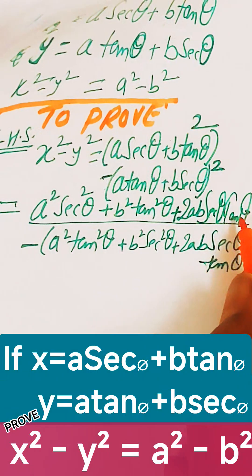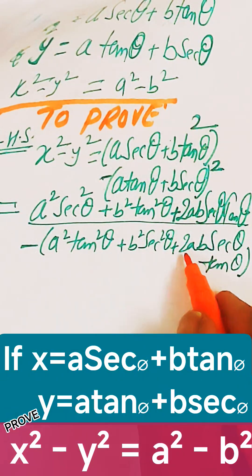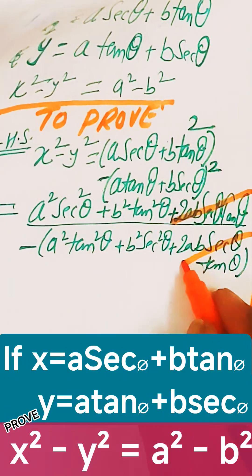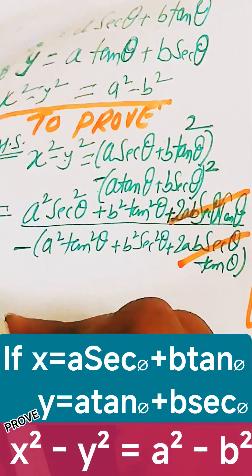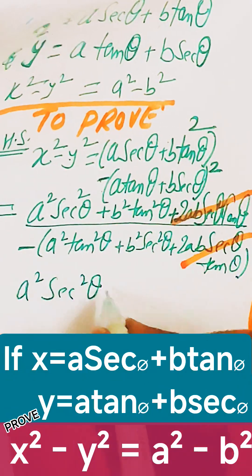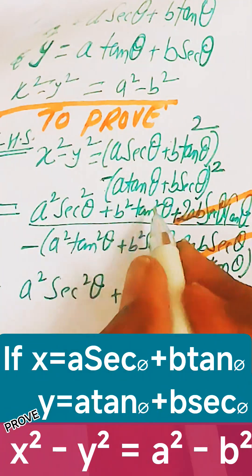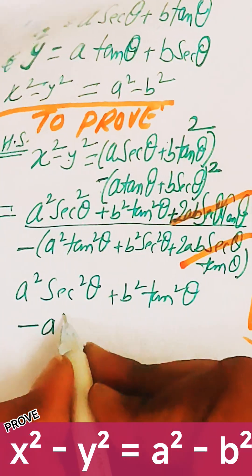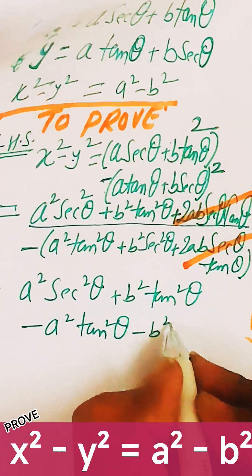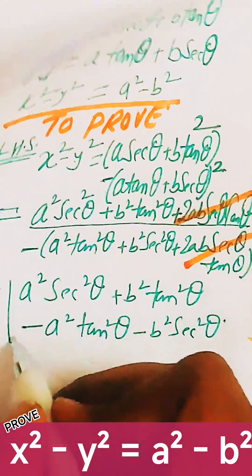When you open the brackets, the 2ab·sec θ·tan θ term is subtracted by 2ab·sec θ·tan θ, so these two cross terms cancel out. We are left with a²·sec²θ + b²·tan²θ minus a²·tan²θ minus b²·sec²θ.